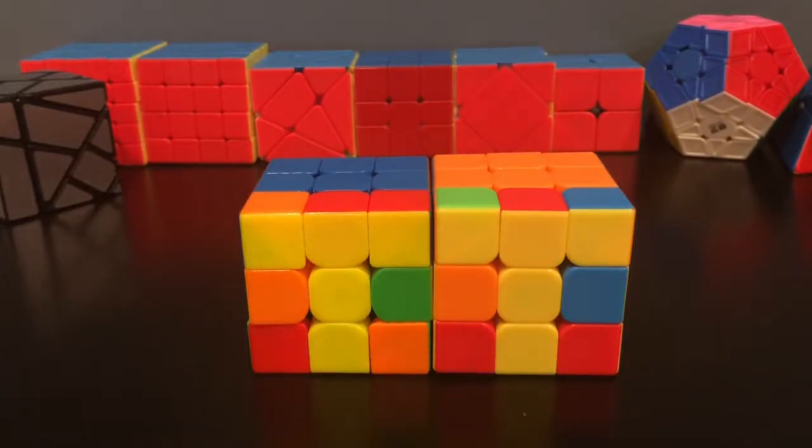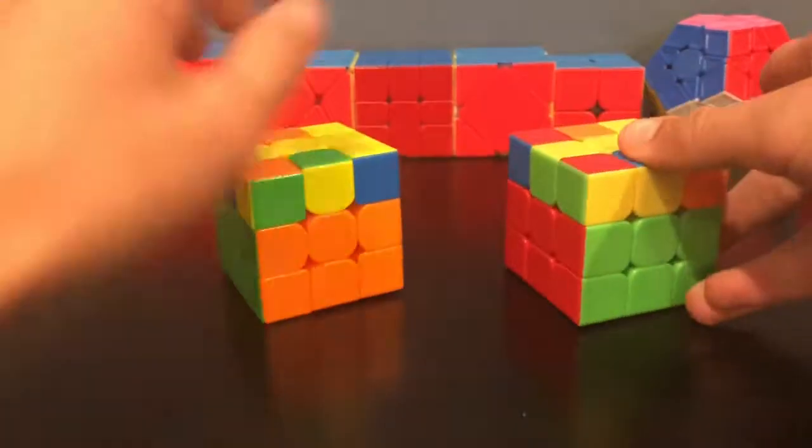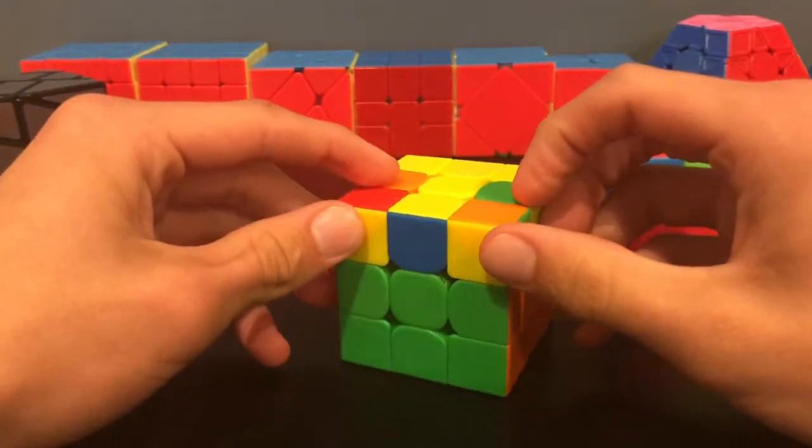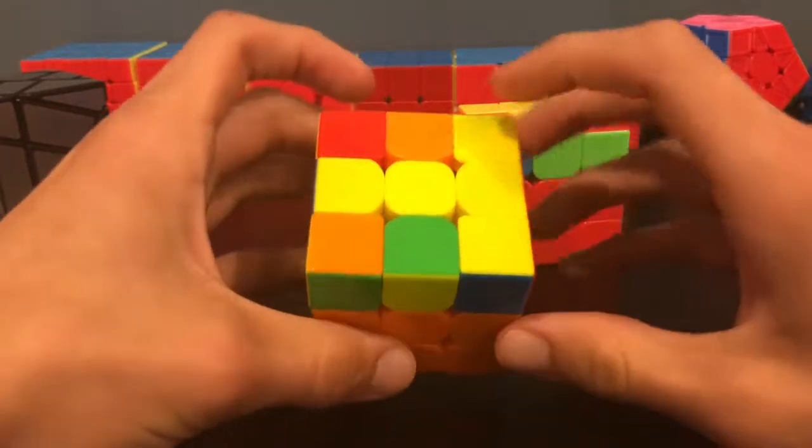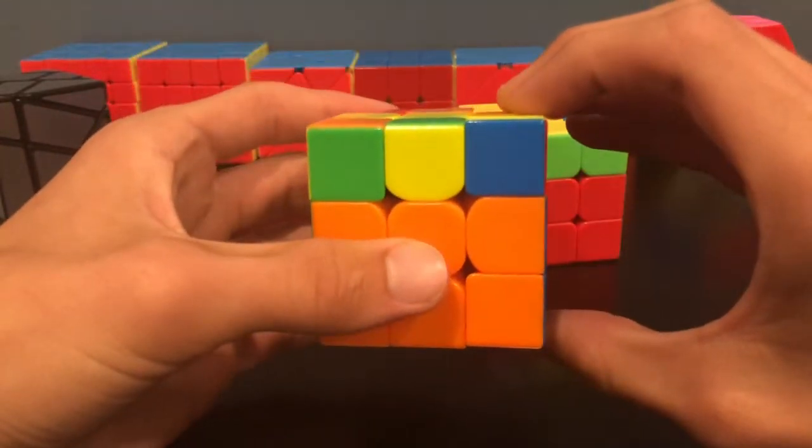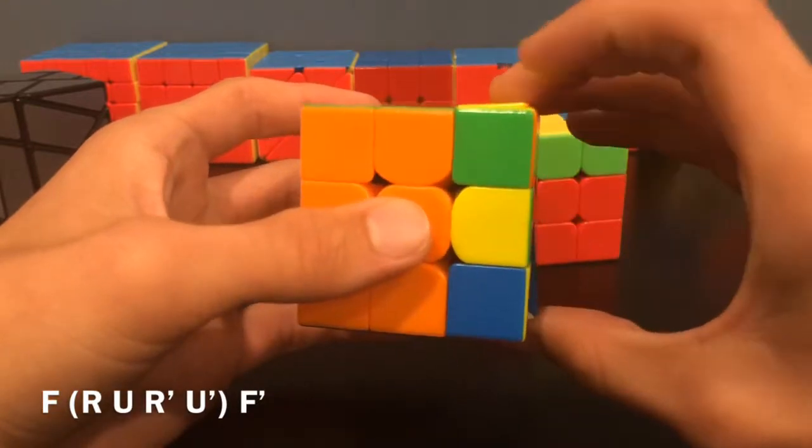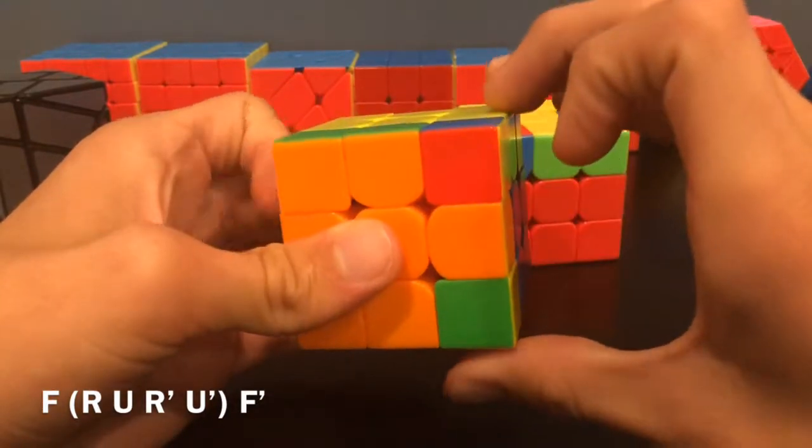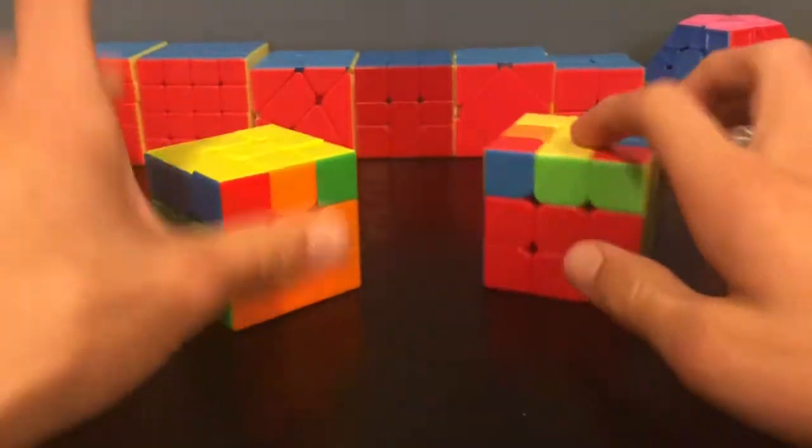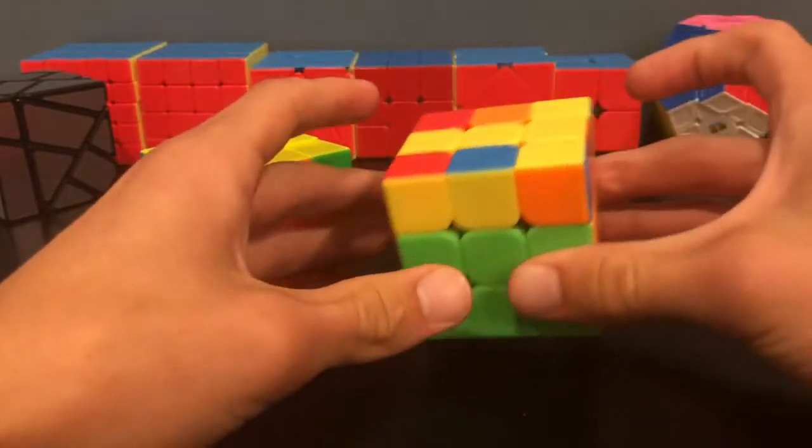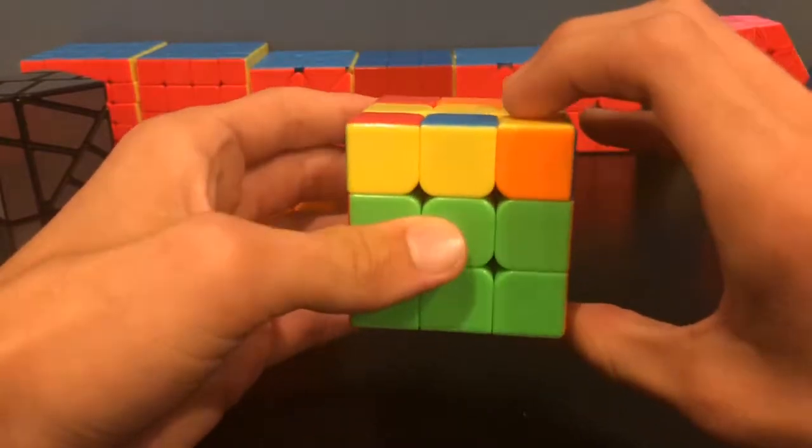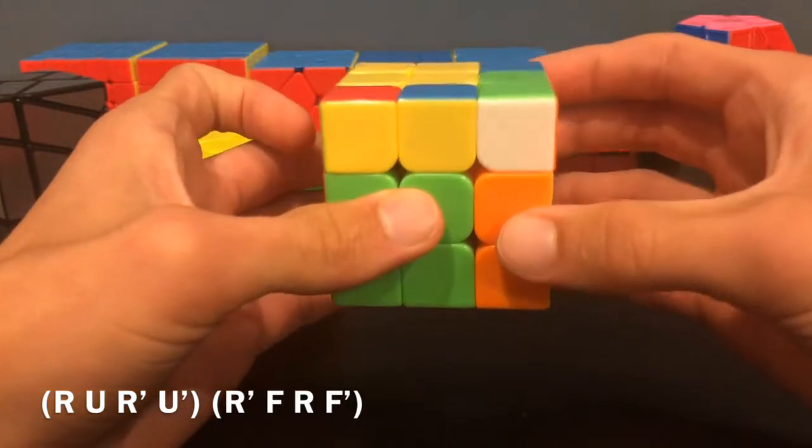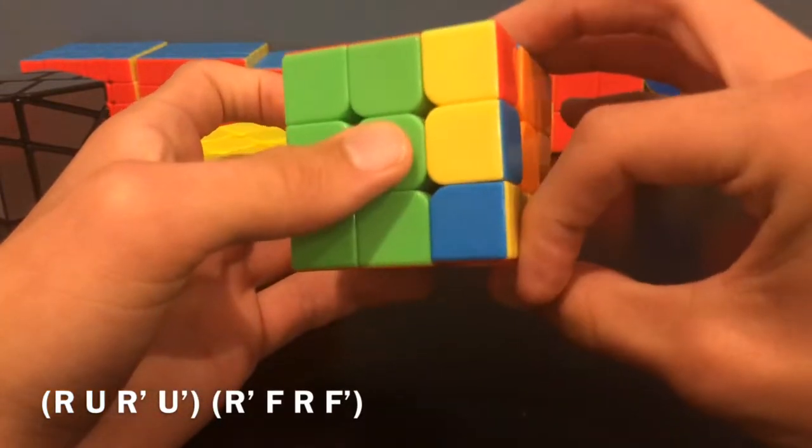First let's go over both cases that form a T on the top. One of these has bars of two on the sides, and then this one just has headlights. So for this one you would hold this side of the T here and perform this algorithm: F R U R' U' F'. For this one you would hold the T in the same way, but you would do this algorithm: R U R' U' R' F R F'.